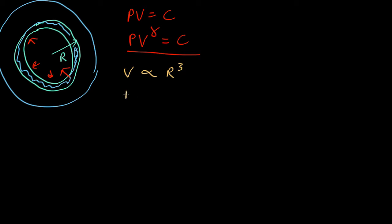The pressure is therefore going to be proportional to 1 over V to the gamma, which is V proportional to R cubed, so it's 1 over R to the 3 gamma. So that tells us the pressure inside.